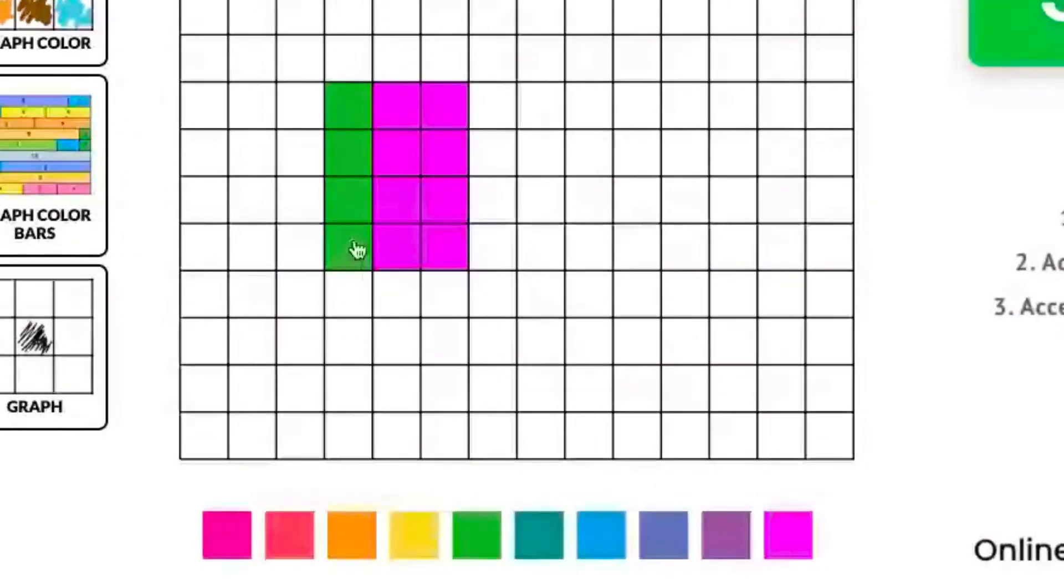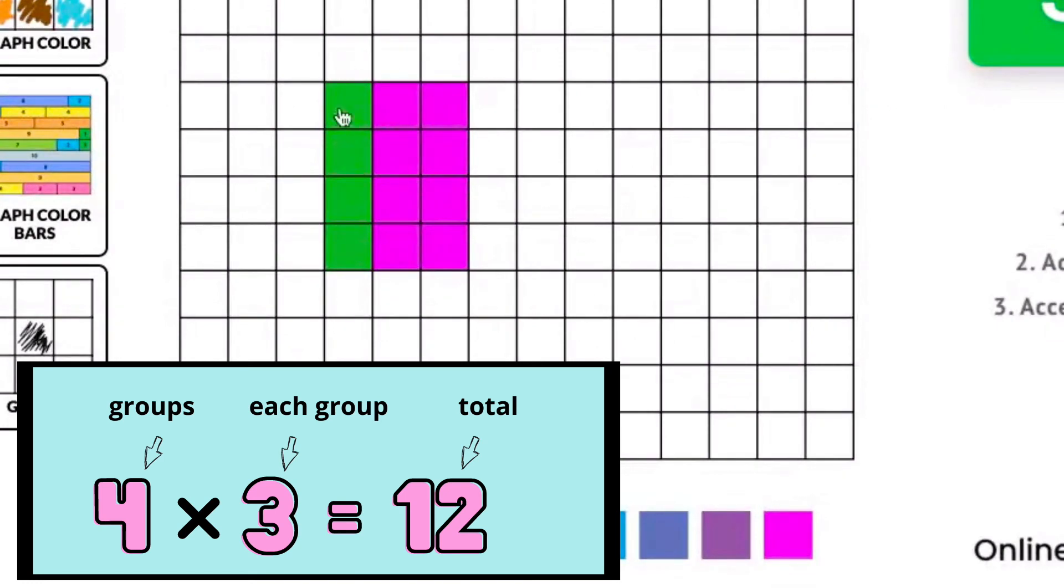The multiplication is 4 times 3 equals 12. Again, that's 4 times 3 equals 12.